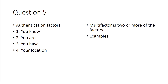The last question covers authentication factors: something you know, something you are, something you have, and your location — those are the big four. Multi-factor authentication uses a combination of two or more of these. An ATM uses something you know and something you have — your PIN and your ATM card. You could also restrict ATM use to only the city you live in, adding location as a third factor. 'Something you are' refers to biometrics like a fingerprint, palm print, or retina scan. Multi-factor is any combination of these factors.